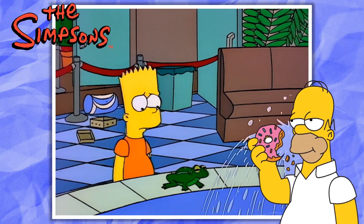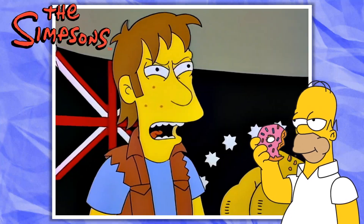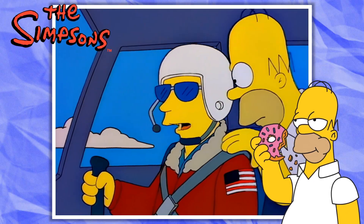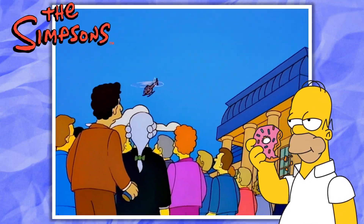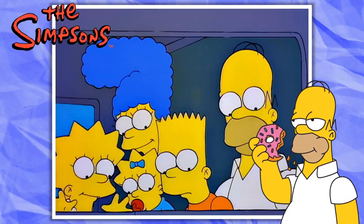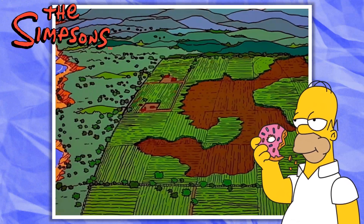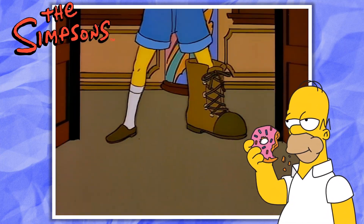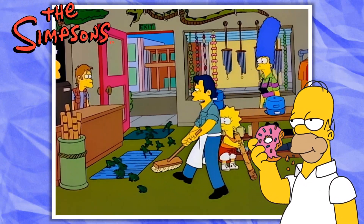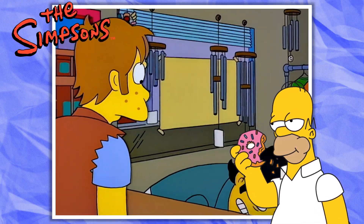The episode also features a subplot where Bart introduces a bullfrog into the Australian ecosystem. Given that this is the Simpsons, this naturally results in the incredible destruction of the Australian ecosystem that can only occur by introducing a foreign species into a new environment. Whilst this might seem like a bit of an unusual subplot, especially for an episode featuring the main threat of Bart being kicked up the arse with a giant boot, it's actually a reference to a very real impact that the introduction of non-native toads into Australia had upon its ecosystem.